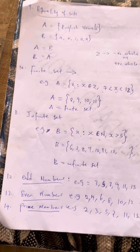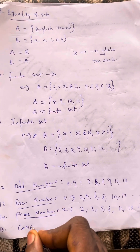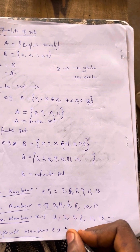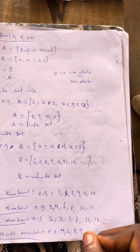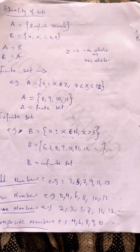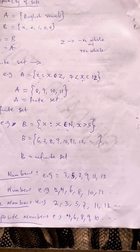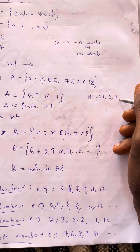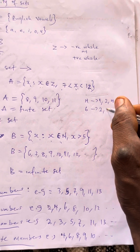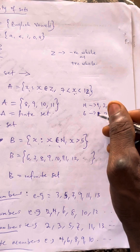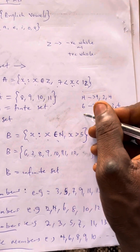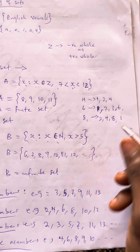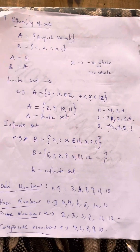Number fifteen is composite numbers. Composite numbers are numbers that have more than 2 factors, for example 4, 6, 8, 9, 10. For 4: it has factors 1, 2, and 4, because 2 × 2 = 4 and 4 × 1 = 4. For 6: it has factors 1, 2, 3, and 6, because 1 × 6 = 6 and 2 × 3 = 6. For 8: factors include 1, 2, 4, and 8, because 1 × 8 = 8 and 2 × 4 = 8.